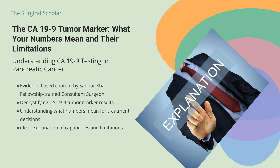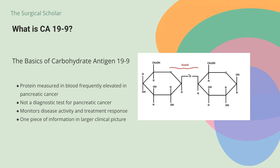Today we're going to demystify this commonly used but often misunderstood tumor marker. CA-19-9, also called Carbohydrate Antigen-19-9, is a protein that can be measured in your blood. It's frequently elevated in pancreatic cancer, which is why doctors use it as a tumor marker. But here's the crucial point to understand right from the start: CA-19-9 is not a diagnostic test for pancreatic cancer. It's a tool that helps doctors monitor disease activity and response to treatment in patients who already have elevated levels.